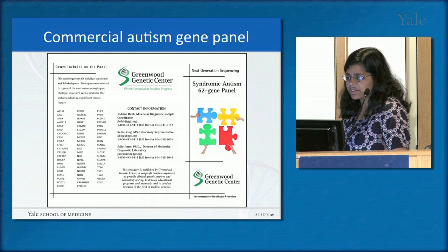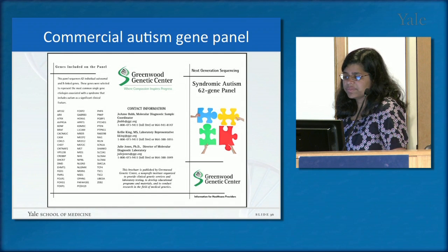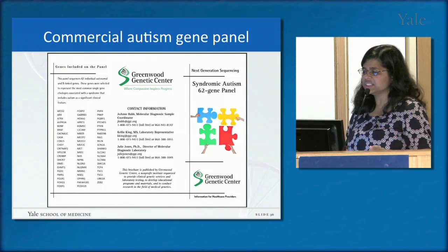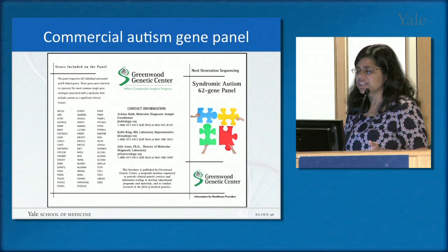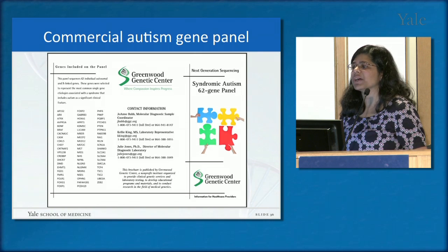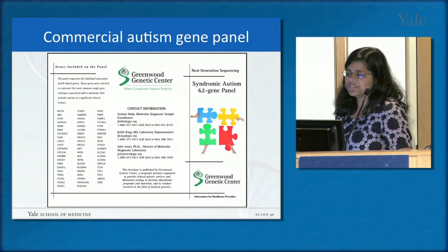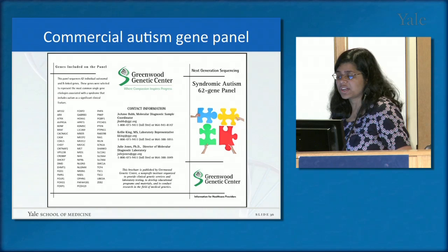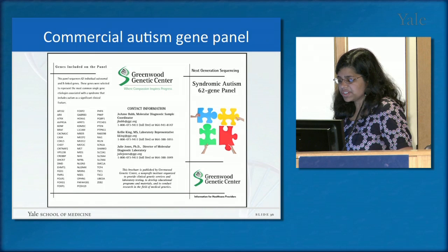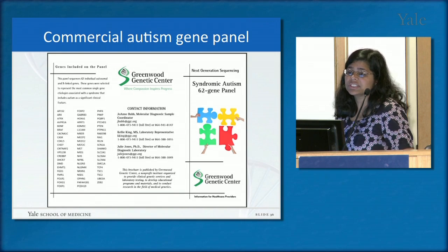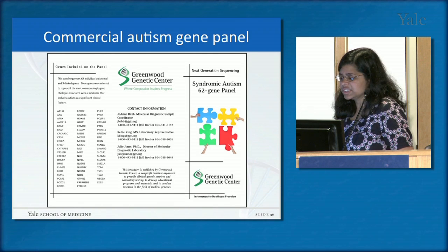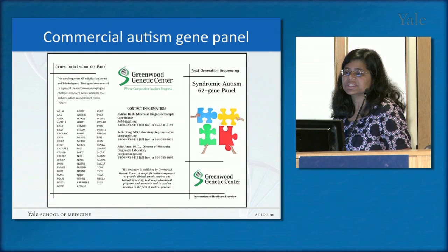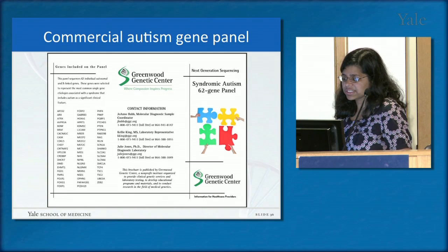Commercial autism gene panels have become very popular — companies advertise testing for a bunch of genes associated with autism, often directed at parents who have a child with autism and are worried about a younger child. While we hope someday to have an autism gene panel that accurately predicts risk, we must be very cautious: many genes on these panels have weak associations with autism or are very rare causes. Even if a child has a mutation in one of these genes, it's not always easy to interpret what that mutation might mean, so we need to proceed carefully.